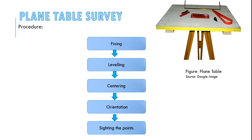Plane table survey — similarly, plane table survey is a graphical method in which field observation and plotting proceed simultaneously. It is a simple and cheaper method. Before preparing cadastral work using plane table, the procedures to be followed are shown in the figure. This method of surveying is more accurate than chain surveying, as discussed earlier.